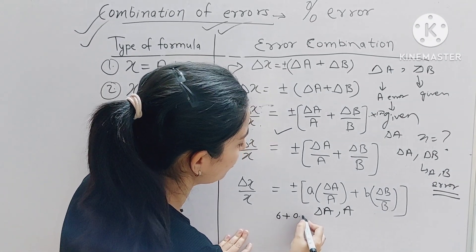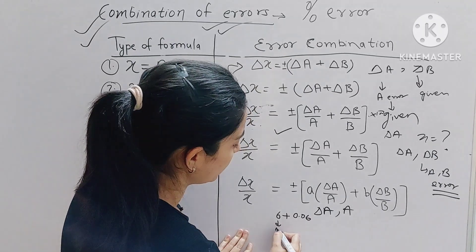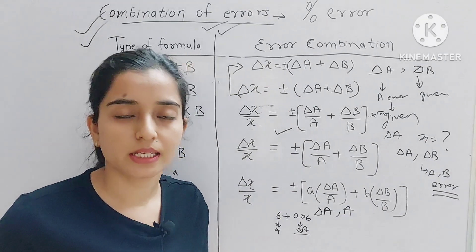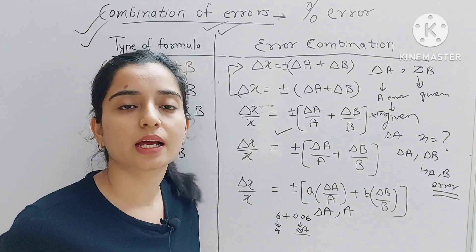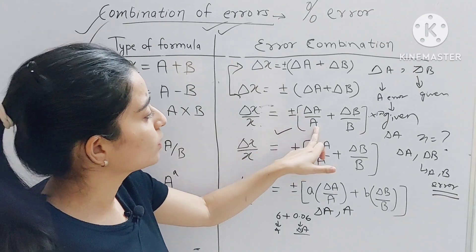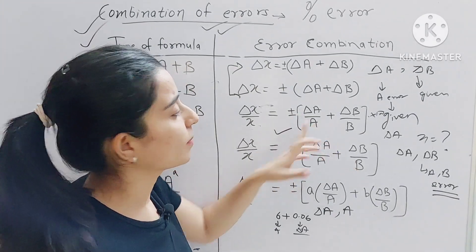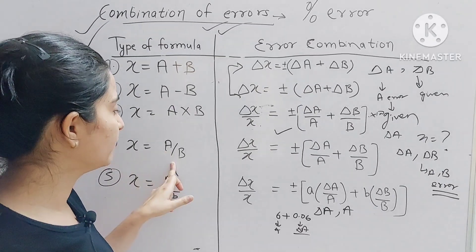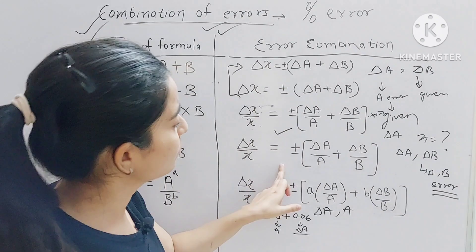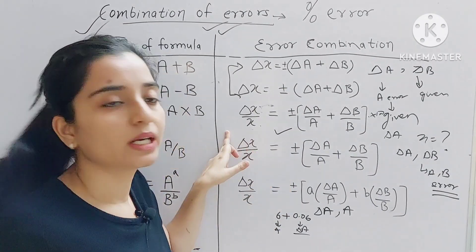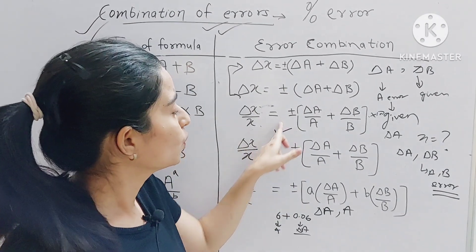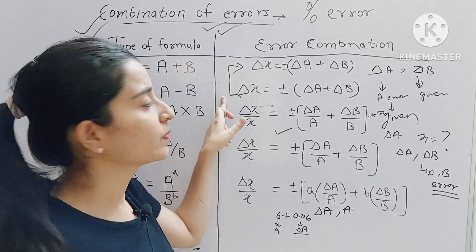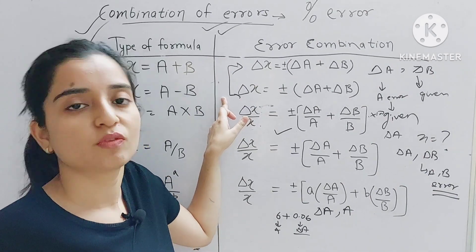We simply put the values and add them, and our result will come. For the case of A divided by B, the formula is the same — whether we talk about multiplication or division, in both cases the error combination formula is the same. Similarly, whether we talk about addition or subtraction, in both cases the formula is the same.